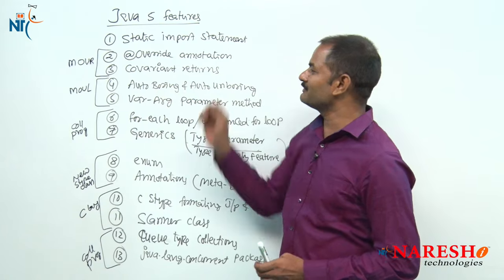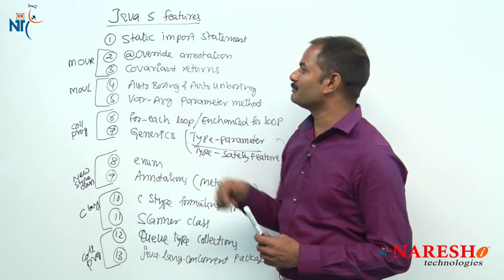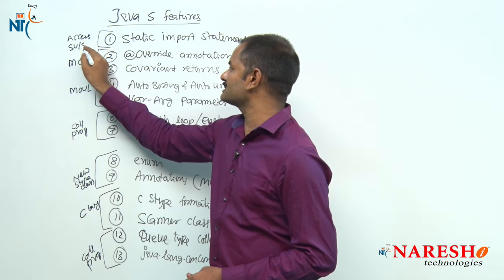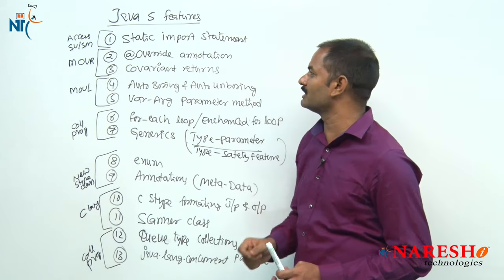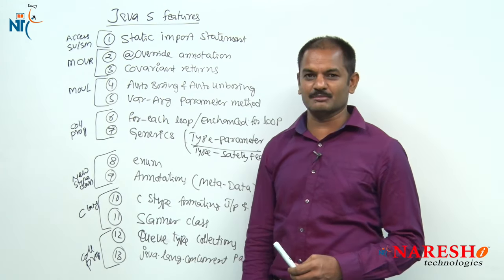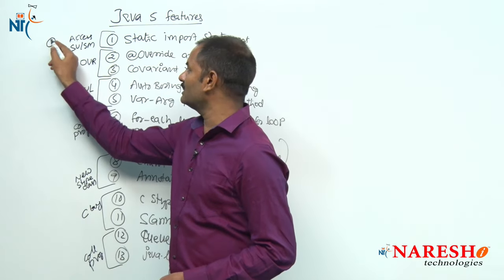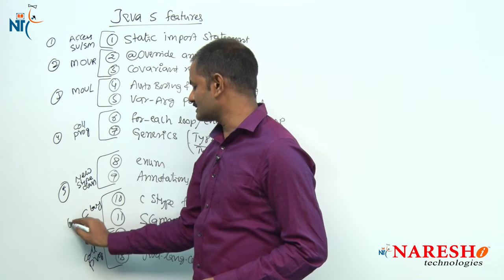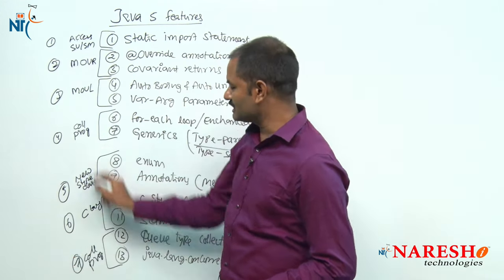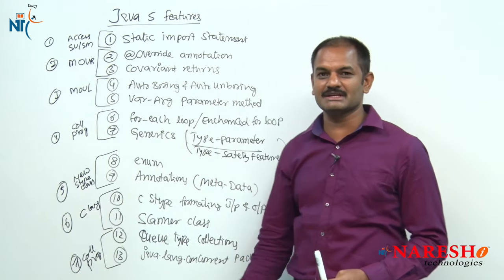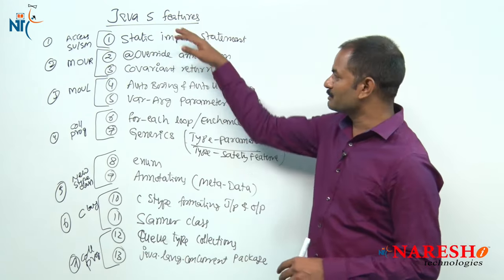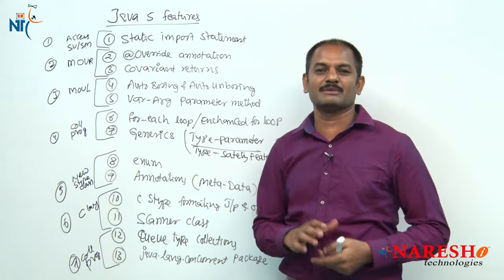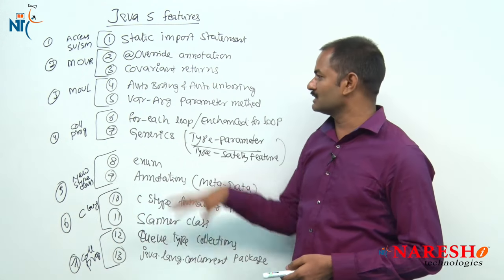Java 5 features are given with these problems in mind: first, accessing static members — static variables and static methods in another class — to address that, static import is provided. So basically, if you remember these 7 main headings — static imports, method overriding, method overloading, collection programming, new class types, C-style I/O, and concurrent collection programming — you can easily remember all 13 features.